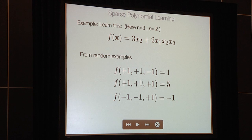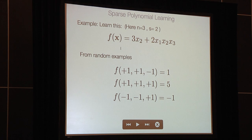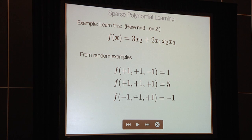Here's an example. I would like to learn the function 3x2 plus 2x1x2x3, but I don't know it. A monkey flips coins, giving me inputs like plus, plus, minus, and tells me the function evaluates to 1 there. For plus, plus, plus, the function evaluates to 3 plus 2, which is 5. For minus, minus, plus, it evaluates to minus 3 plus 2, which is minus 1. I see these random examples and need to learn the s non-zero coefficients.